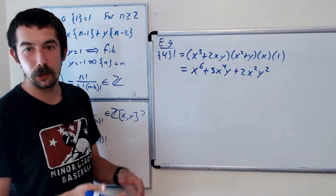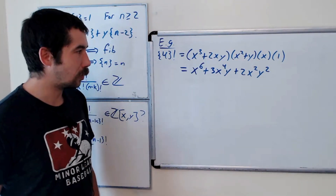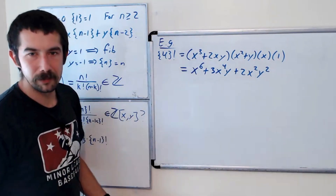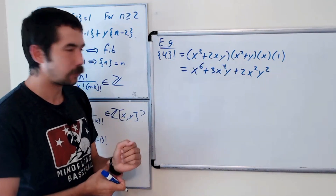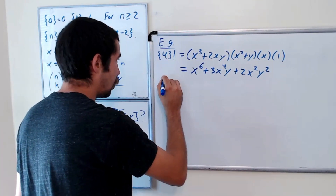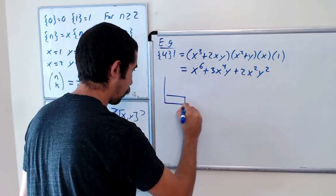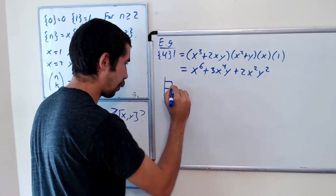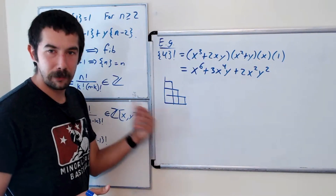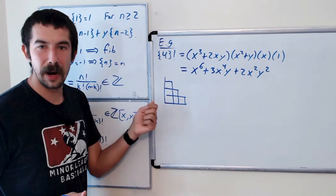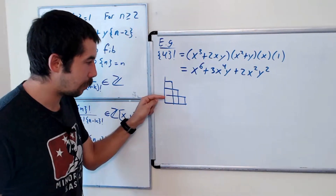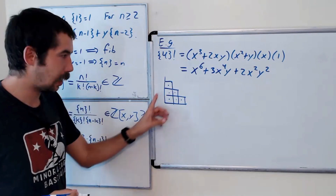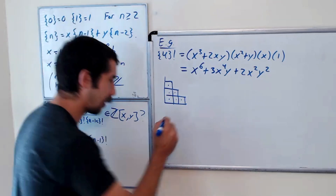Before we show that the Lucas binomial is a polynomial with integer coefficients, let's come up with a combinatorial object to help us evaluate this Lucas factorial without doing all that multiplication. The way we do this is we start with a pyramid: the bottom row has n minus one boxes, the next row has n minus two, and so forth until the top row has one box. We tile the rows with dominoes and monominos — only across the rows. With all monominos, the weight of this tiling is x to the sixth.